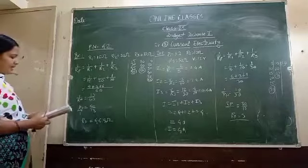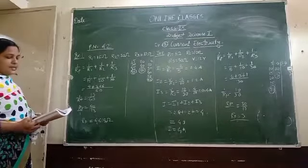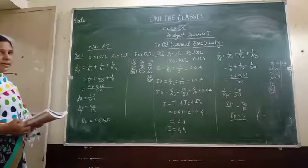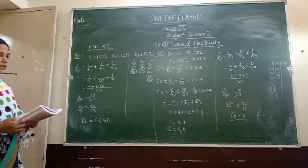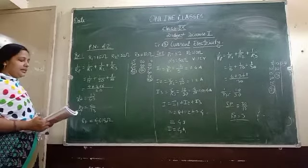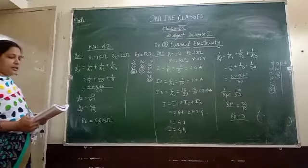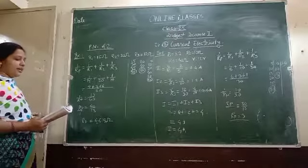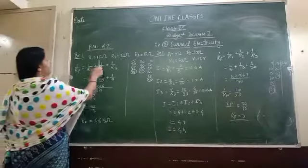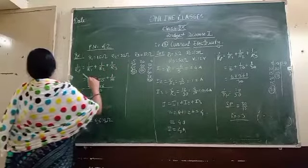We will start from page 42. The problem given is 100 examples of resistors in parallel. See here example number 1: resistances having resistance of 15 ohm, 20 ohm and 10 ohm are connected in parallel. So R1 = 15 ohm, R2 = 20 ohm, and R3 = 10 ohm.